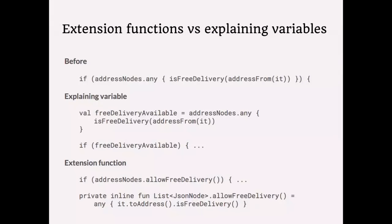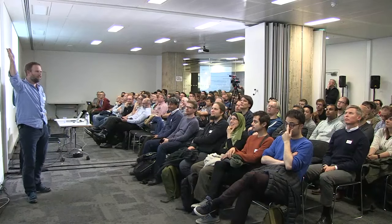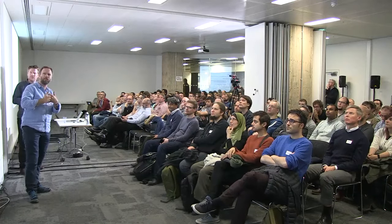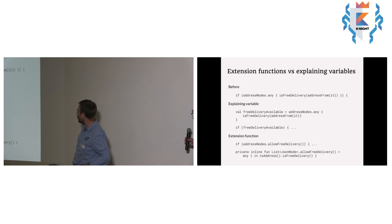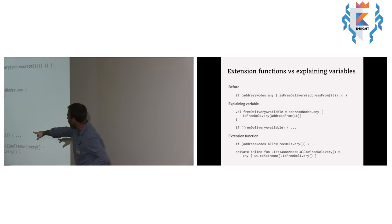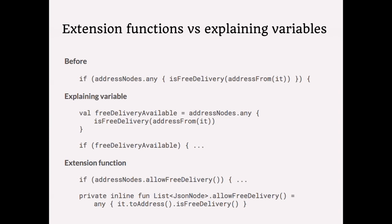We end up trying to express a thing by writing it inline and then pulling out an explaining variable — in this case, 'freeDeliveryIsAvailable' — and then asking that. We'll tend to pull out extension functions, such as an extension function on List of JsonNode, which allows us to call a thing inline without creating new variables. If you make these inline extension methods, it's as if you'd called them in place — nice and efficient, and reads really nicely.